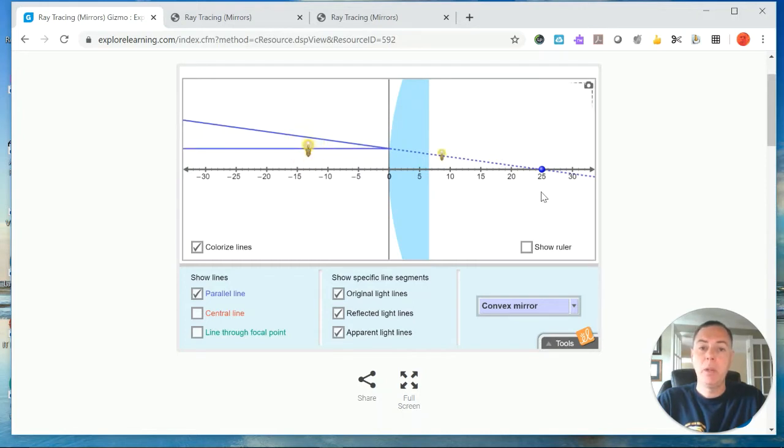We also have the option over here where the blue dot is—this is the focal point. You can change the focal point length and you'll see that the actual shape of the mirror changes.